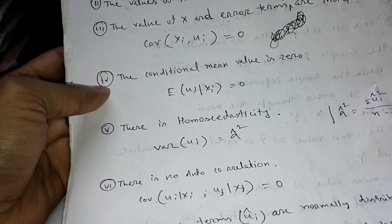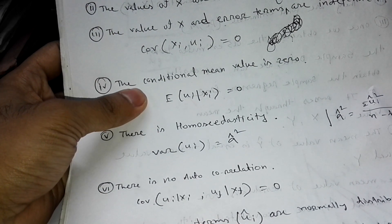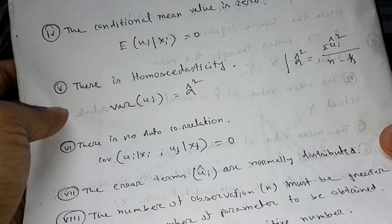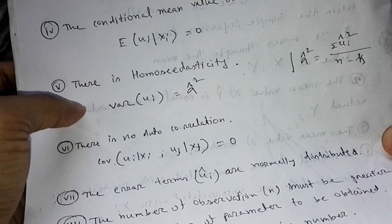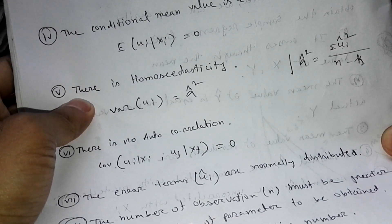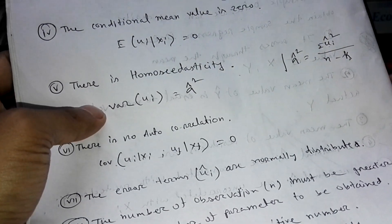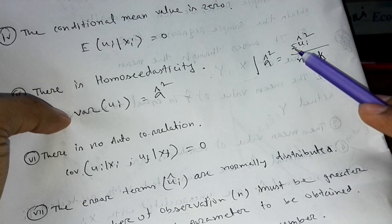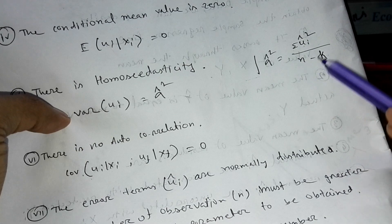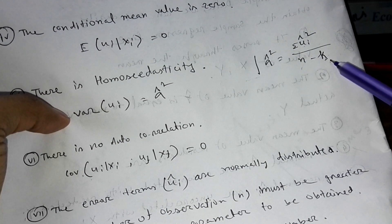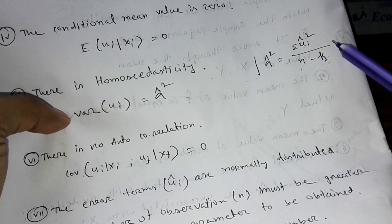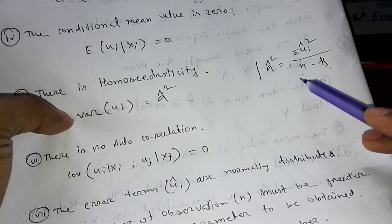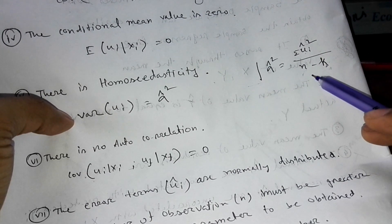Property four says the conditional mean is zero — E(ui | xi) = 0. Property five says there is homoscedasticity and no heteroscedasticity. The variance equals sigma squared, which is the summation of ui squared divided by n minus k, where k is the number of parameters (beta 1, beta 2, etc.) and n is the number of observations.